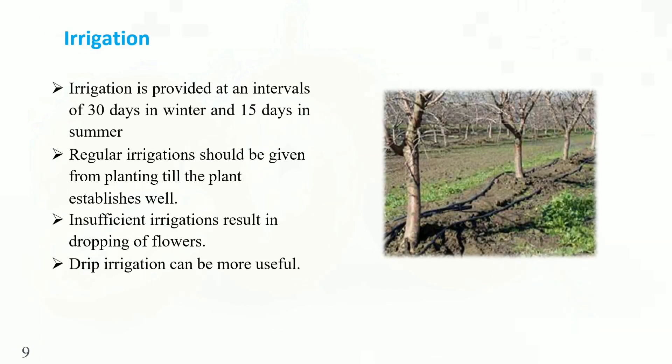Irrigation. Irrigation is provided at intervals of 30 days in winter and 15 days in summer. Regular irrigation should be given from planting until the plant is well established. Insufficient irrigation results in dropping of flowers. Drip irrigation can be more useful.